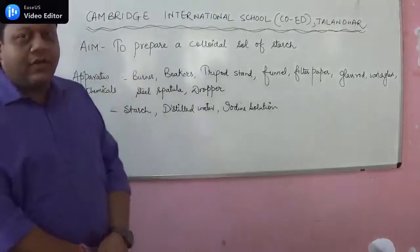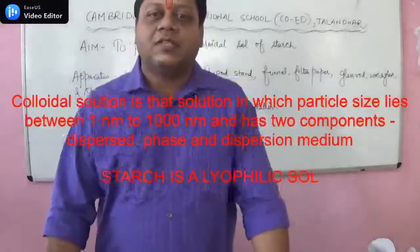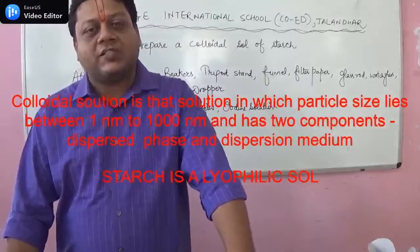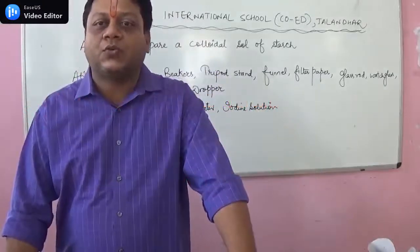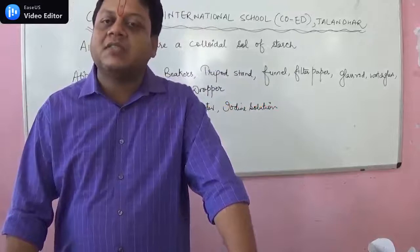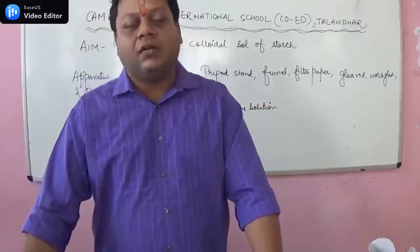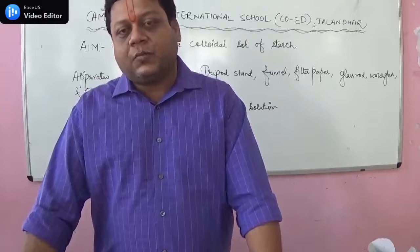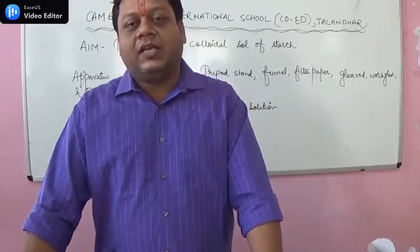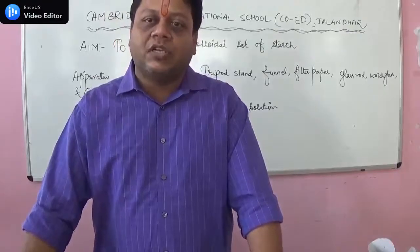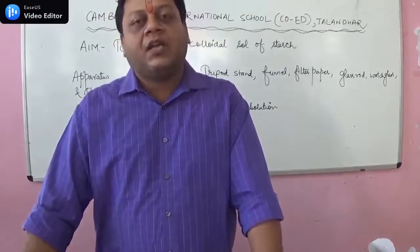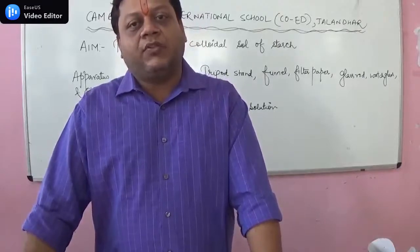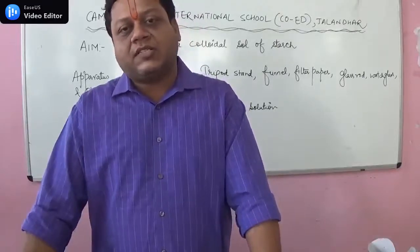Now students, what is a colloidal solution? A colloidal solution is a solution in which particle size lies between 1 to 1000 nanometers. The colloidal particles range is between true solutions and suspensions, so the colloidal solution is intermediate between true solutions and suspensions.